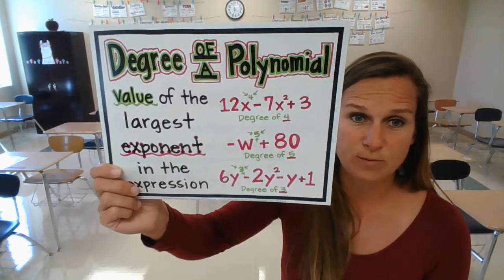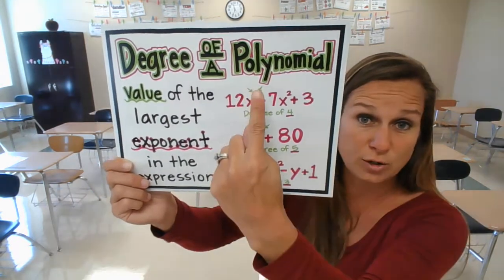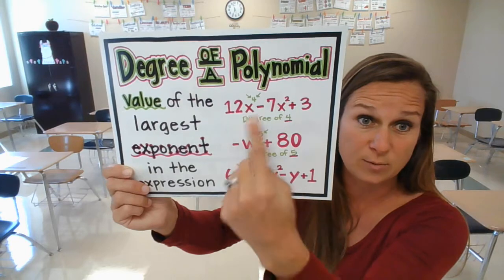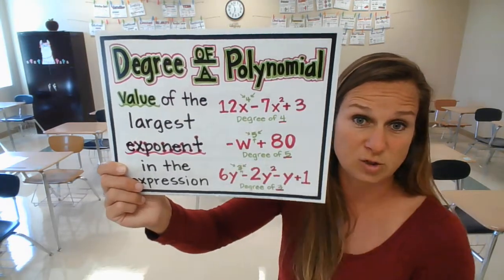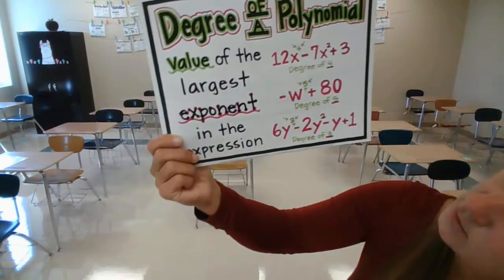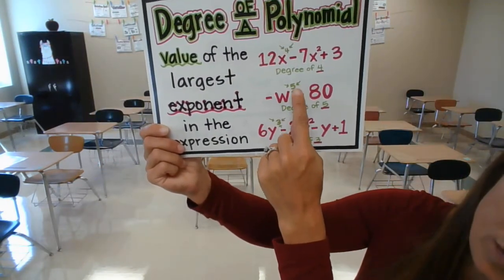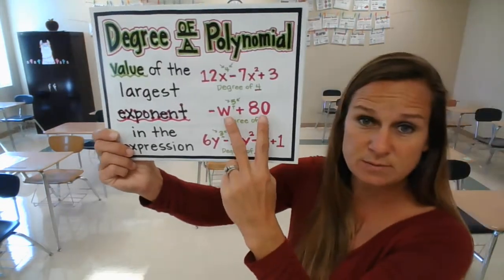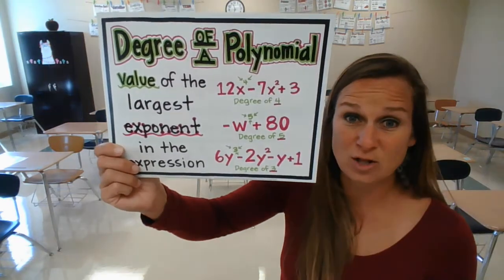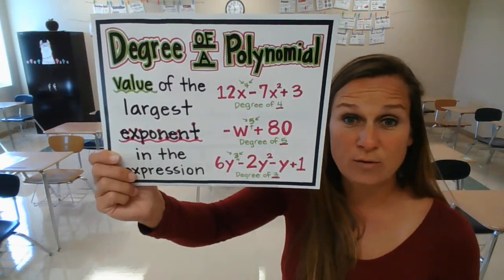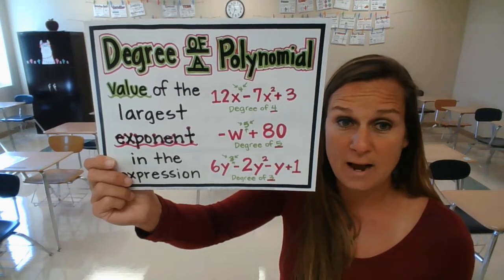We will be naming polynomials by their degree and their number of terms. The largest degree is the degree of the entire polynomial — this one is a fourth degree trinomial. Let's look at a second one: negative w to the fifth plus 80. Two terms makes it a binomial, and five is the largest exponent, so that would be a fifth degree binomial.